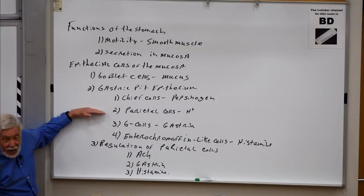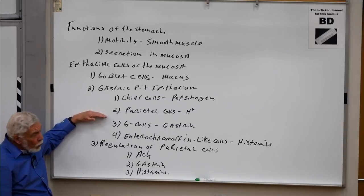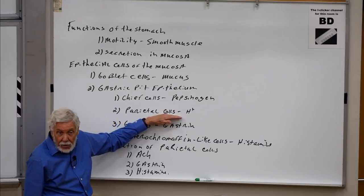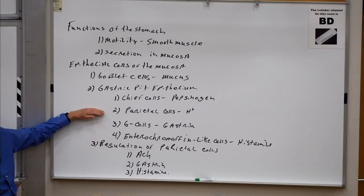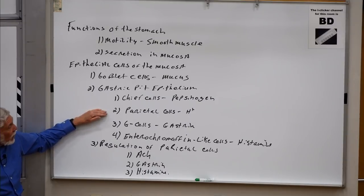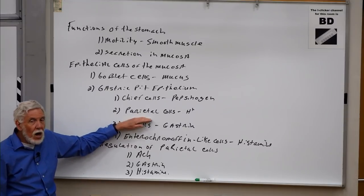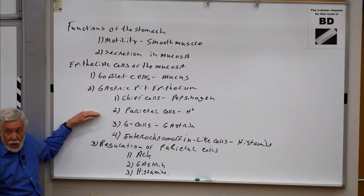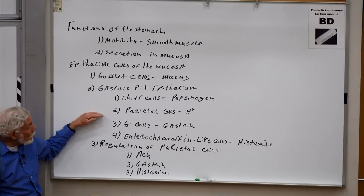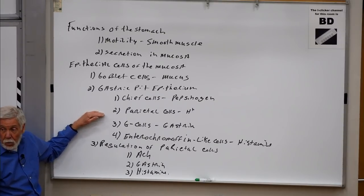The major player we'll spend time on are the parietal cells. The function of the parietal cells is to secrete hydrogen ion. For a long time it was thought hydrogen ion played a role in digestion by acidifying stomach contents, but it turns out the main reason we secrete hydrogen ion into the lumen is to inhibit bacterial growth — important because not long ago almost every meal we ate had a lot of bacteria with it.